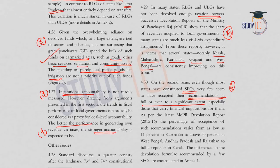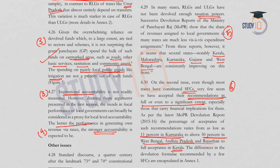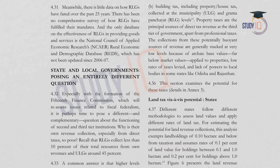A few states have accepted State Finance Commission recommendations in full or to a significant extent. Kerala is an exceptional example where recommendations are 100% accepted. Other states show much lower acceptance — 11% in Karnataka, 50% in West Bengal and Andhra Pradesh, and similar partial acceptance in Rajasthan. There has also been no comprehensive survey to measure how rural local governments have fulfilled their mandates.